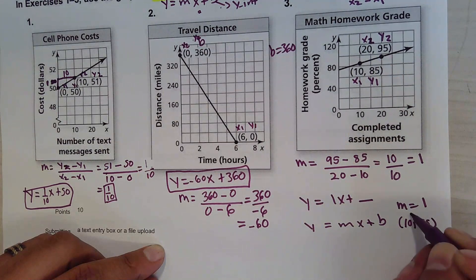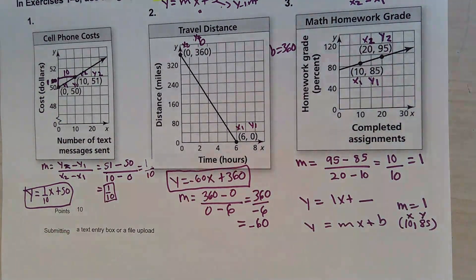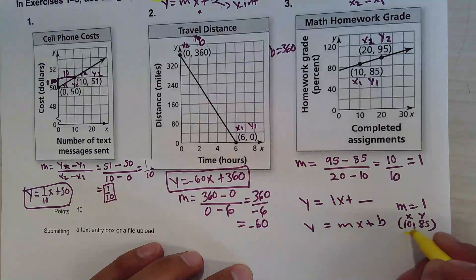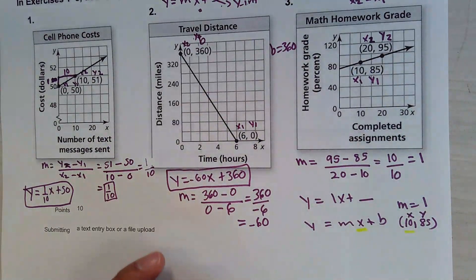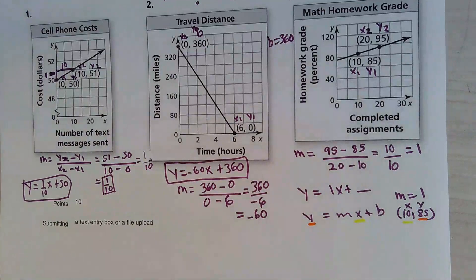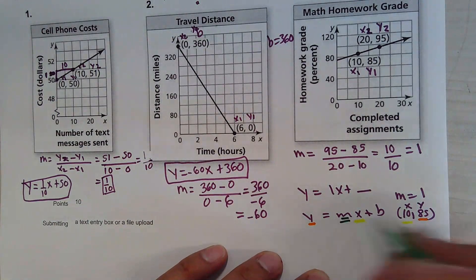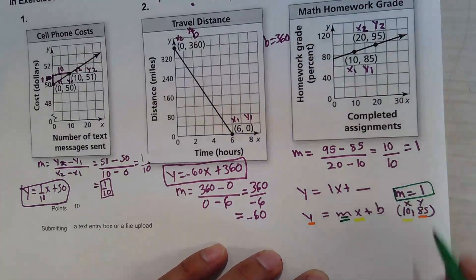10, 85, and we're going to label that x comma y. So that when we replace it, the x will go in place of here. The y will go in place of here, and the slope will be replaced with the slope that we got here.